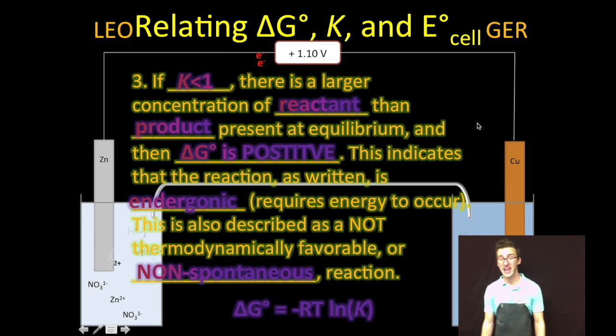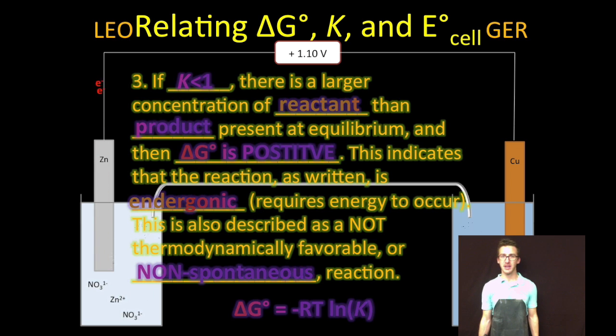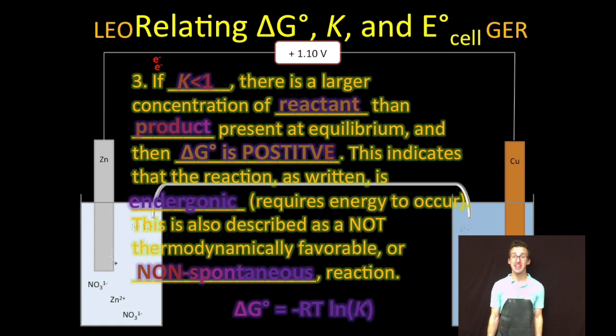If, however, K is less than 1, if your equilibrium constant is less than 1, recall that that means there's a larger concentration of reactant than product present at equilibrium. This will make delta G positive. It indicates that the reaction as written is endergonic. Basically, not thermodynamically favored, not spontaneous. It's going to require energy to occur.